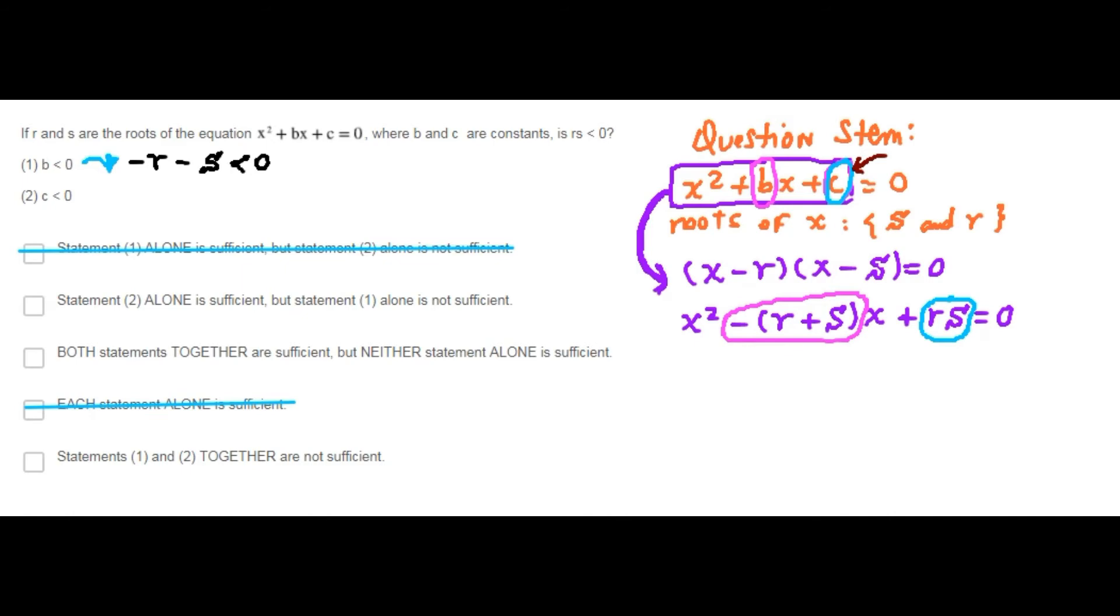From statement 2 alone, c is less than 0. C can be replaced by R times S. So statement 2 says the product R times S is less than 0, and that is the answer to the question.